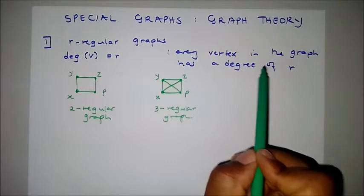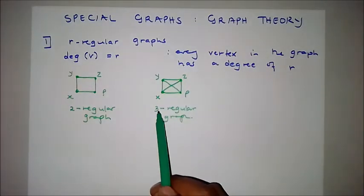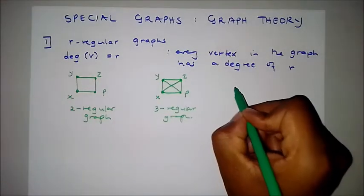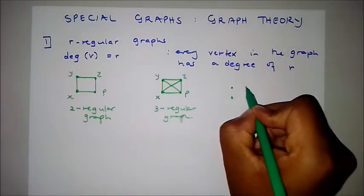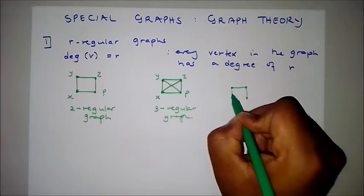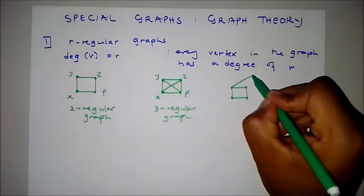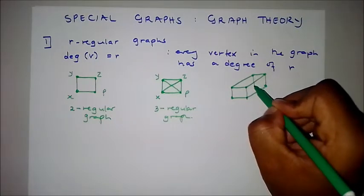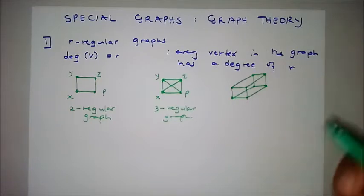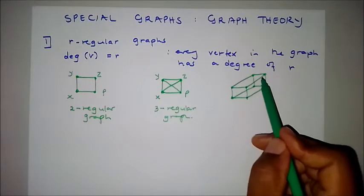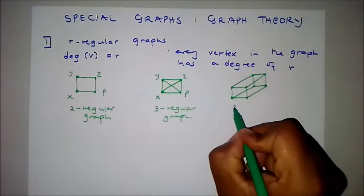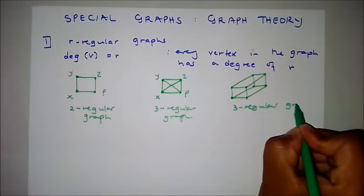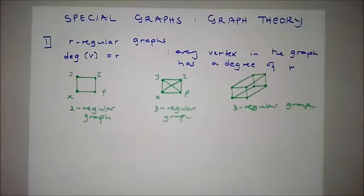For a three-regular graph, every vertex in the graph has a degree of three. Here's another example — it looks like a cube — where all the vertices have a degree of three, and hence this is also a three-regular graph. That concludes r-regular graphs.